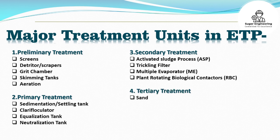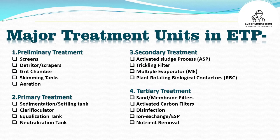3. Secondary Treatment — it includes activated sludge process (ASP), trickling filter, multiple evaporator plant, and rotating biological contactors (RBC). 4. Tertiary Treatment — it includes sand or membrane filters, activated carbon filters, disinfection, ion exchange or ESP, and nutrient removal.